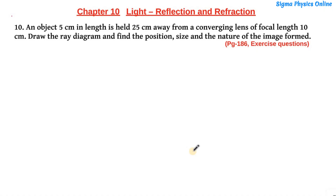Hello students, welcome back. Let's solve exercise question number 10 of chapter 10, Light, from the class 10 NCERT science textbook. The question reads: an object 5 centimeter in length is held 25 centimeter away from a converging lens of focal length 10 centimeter. Draw the ray diagram and find the position, size, and nature of the image formed.